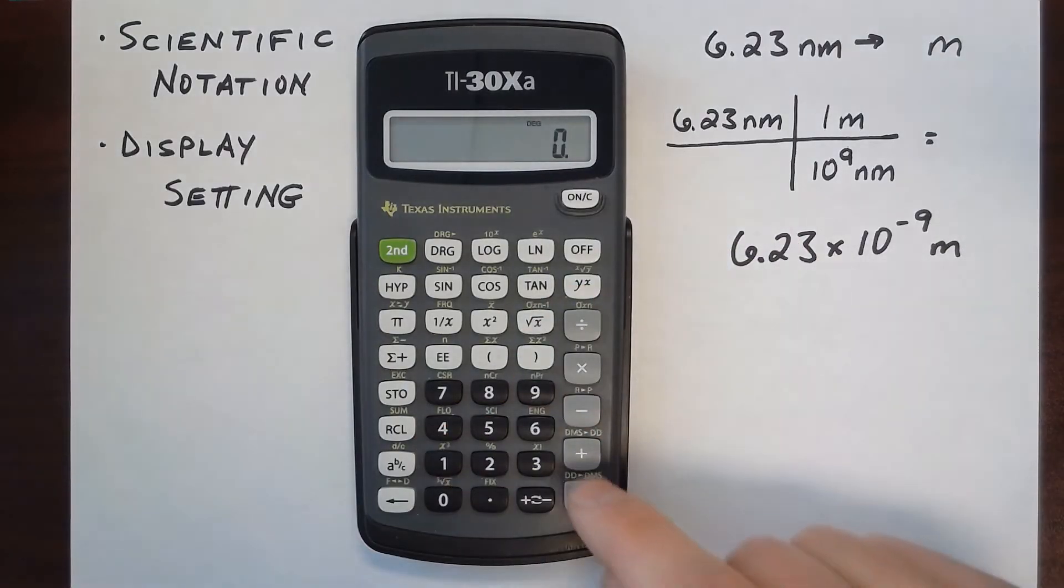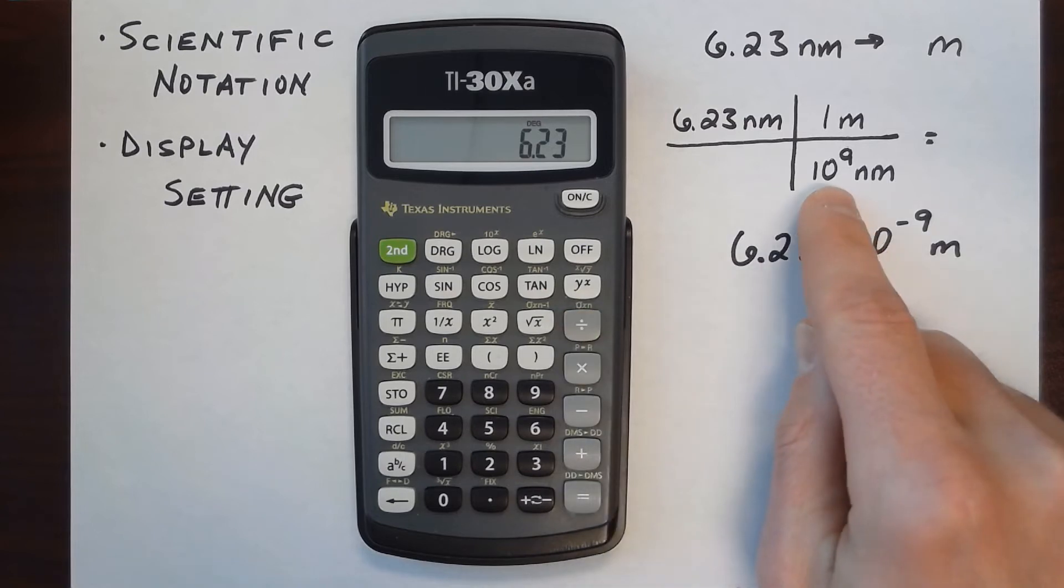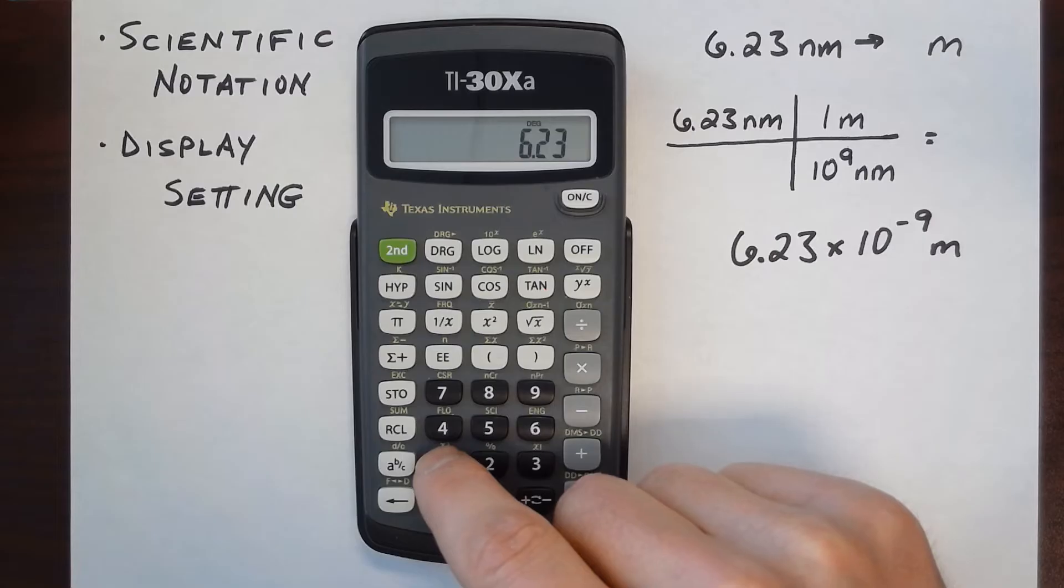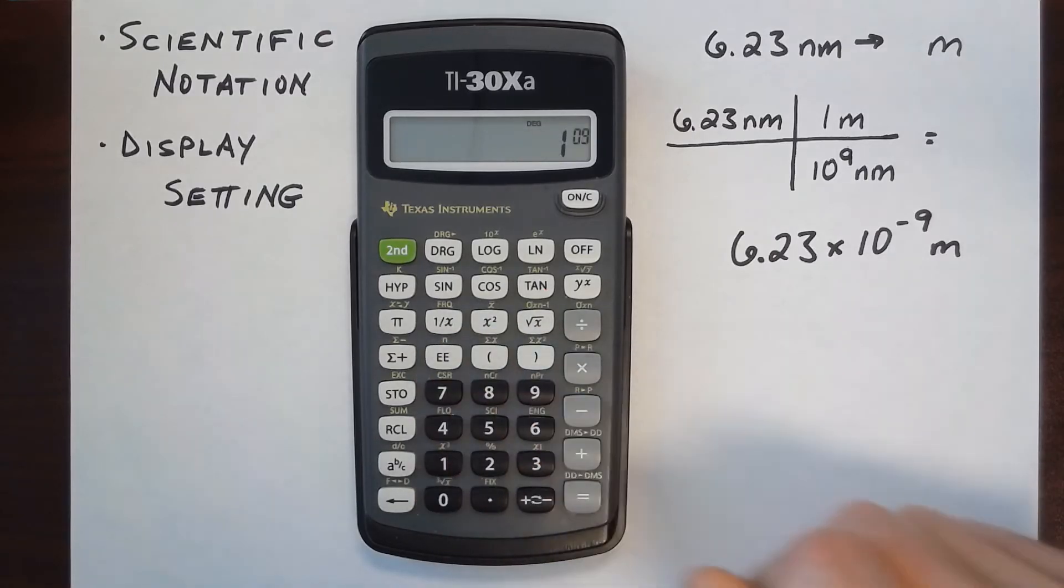So let's work this problem here. I'm going to take 6.23, and I'm going to divide it by 10 to the 9. So in order to divide it by 10 to the 9, I can enter 10 to the 9 as 1E9, so that is 1 times 10 raised to the 9th power.